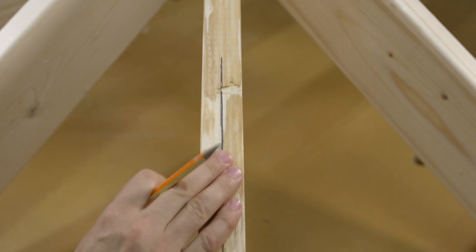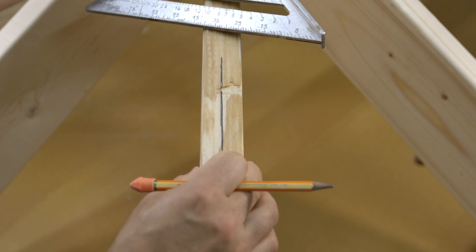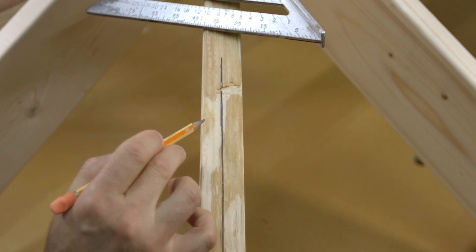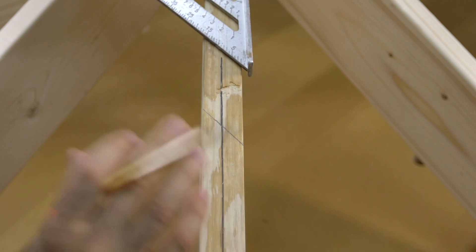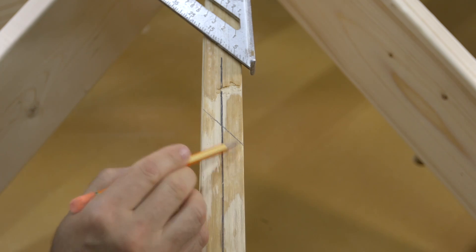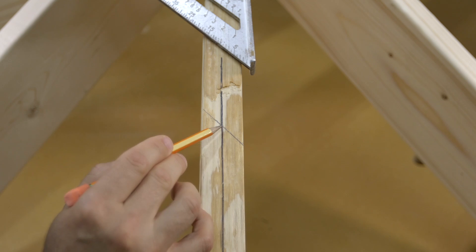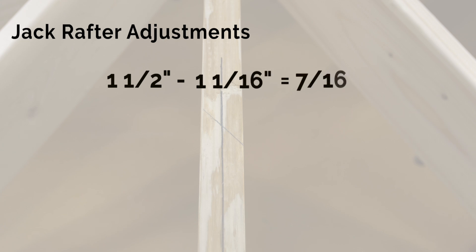So where does this mysterious 7/16 come from? It has to do with the dual beveled angle we made at the top of the hip rafter. The simplest way to come up with the 7/16 is to subtract the rafter's thickness from half its diagonal length. To get the diagonal length, you draw a 45 degree line and measure half that distance. For an inch and a half rafter, the diagonal measurement is two and an eighth, so half of that is an inch and a sixteenth. Therefore, an inch and a half minus an inch and a sixteenth equals 7/16, which is then added to the jack rafter lengths coming directly from the calculator.